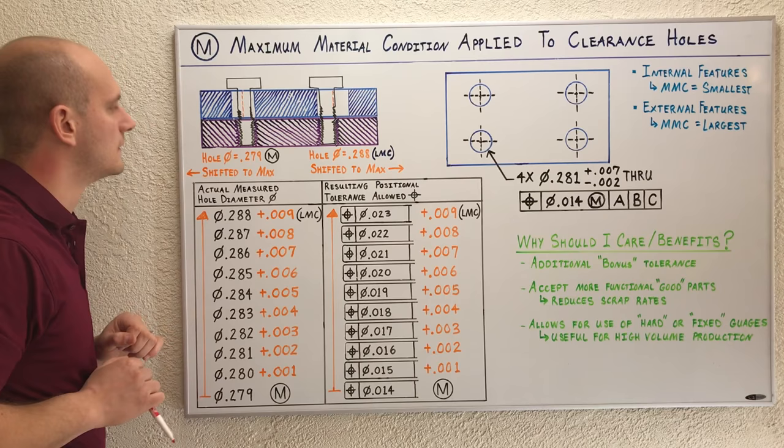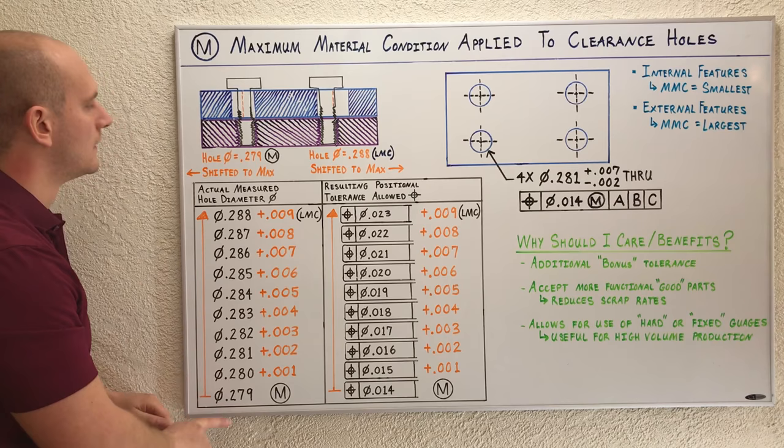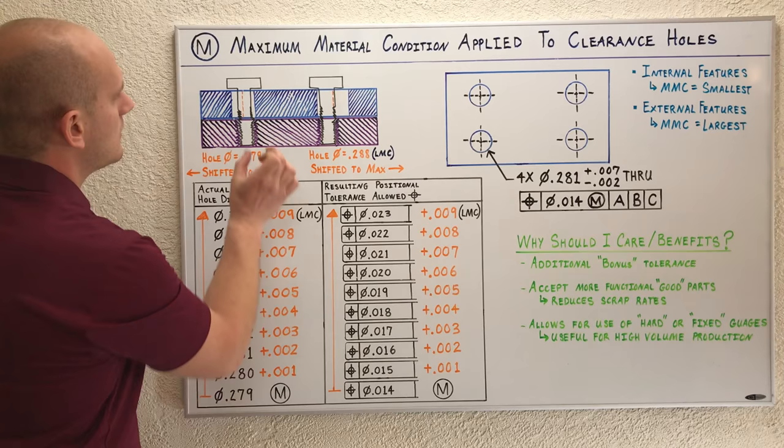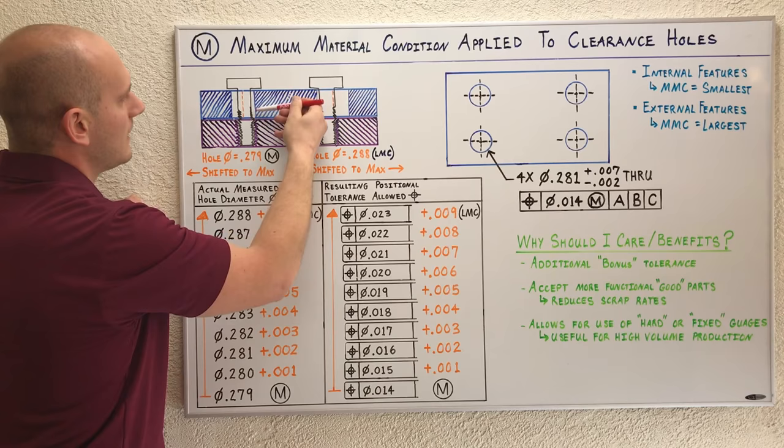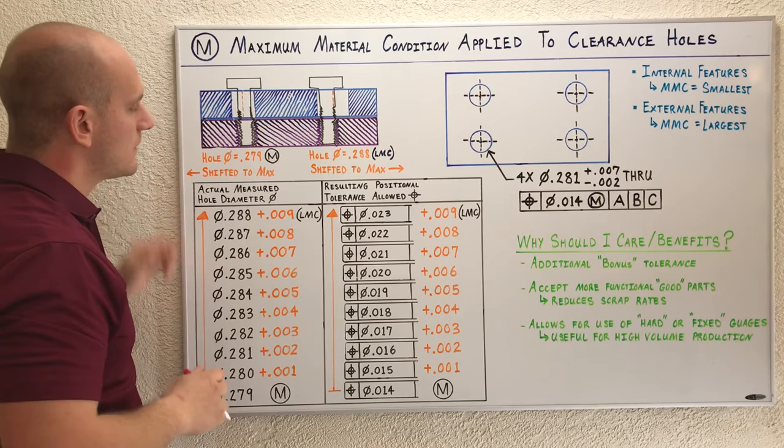Let's look at a couple scenarios. Say this part was machined, the hole was drilled, and the inspector inspected it at 279, our maximum material condition size. They also inspected the hole location and it shifted to the left all the way to its maximum allowed of 14,000. Now if you look at this hole, it's shifted over to its maximum and we still don't have any interference between the sidewall of this clearance hole and the surface of this fastener. That's what we don't want—we don't want any interference.